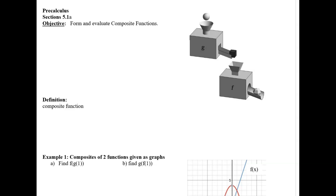One mathematical example could be: let's say f of x is the square root of x. In that machine, negative numbers can't go in — you can't compute the square root of a negative number. However, let's say g of x is the absolute value. You could put any number into g of x; it turns it into a positive number, which then goes into f of x and you'd get an output. This is an example of how composites work with equations.